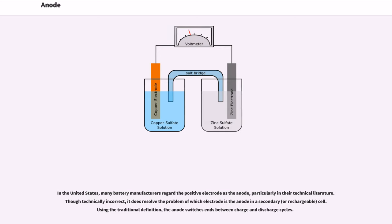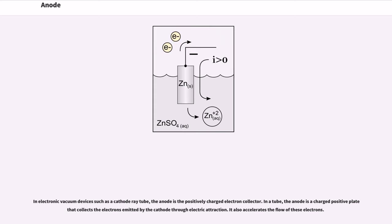In the United States, many battery manufacturers regard the positive electrode as the anode, particularly in their technical literature. Though technically incorrect, it does resolve the problem of which electrode is the anode in a secondary (or rechargeable) cell. Using the traditional definition, the anode switches ends between charge and discharge cycles.